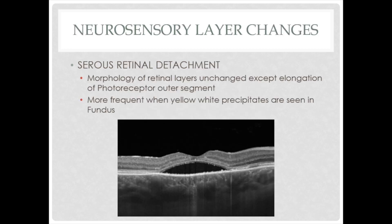Changes in the neurosensory layer: serous retinal detachment is one of the pathognomonic characteristics seen in acute CSCR. The morphology of the retinal layers remains unchanged except for elongation of the photoreceptor outer segment. In acute cases there is minimal elongation, whereas in chronic cases the photoreceptors remain detached from the RPE for a longer period, resulting in inadequate phagocytosis and elongation of the outer segment — sometimes called shaggy photoreceptors. A persistent thick outer segment may progress to a permanent subretinal deposit with very poor visual prognosis.